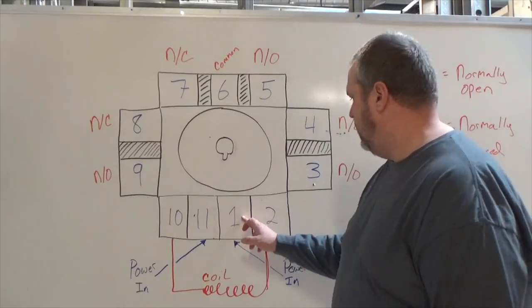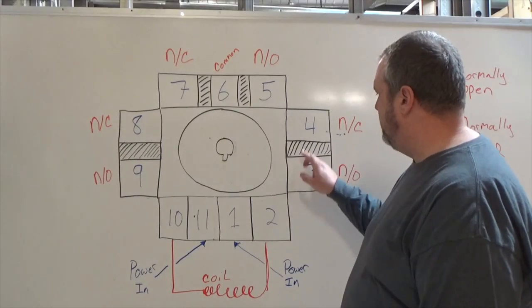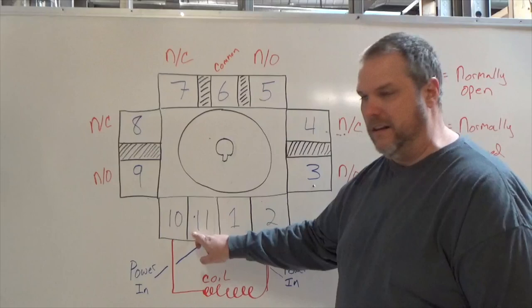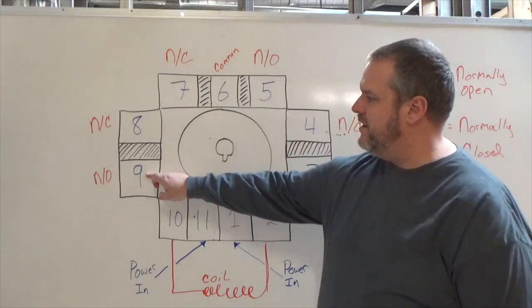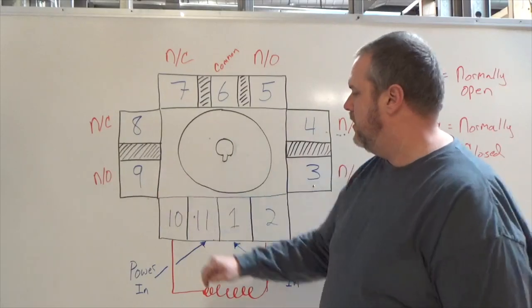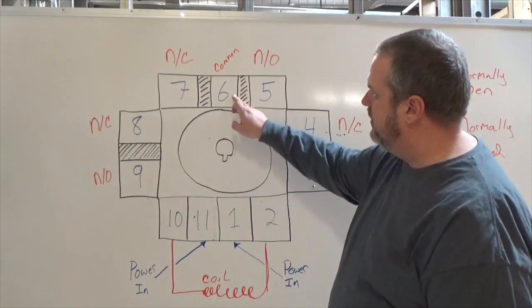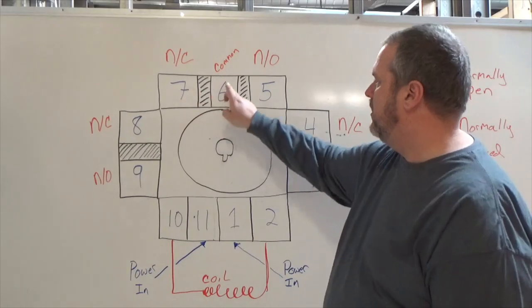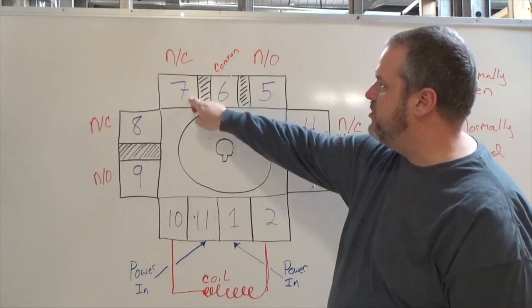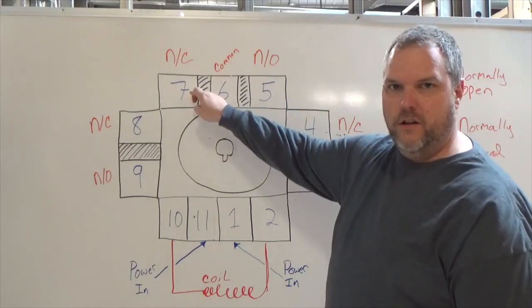Pin 1 will operate your normally open and your normally closed, pins 3 and 4. Your 11 will operate your 8 and 9, normally closed and normally open. Now typically, 5, 6, 7, your 6 would be your common and you would use your 5 and your 7 as your normally open and normally closed.